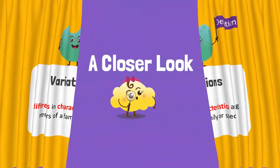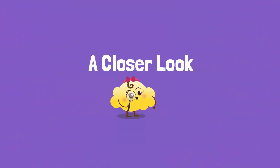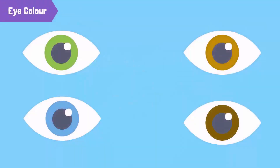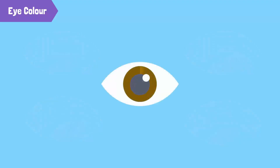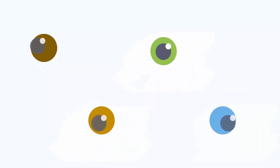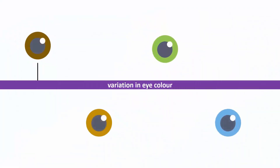Let's take a closer look at variations with some examples. Eye color is a genetic trait that varies in humans. Our genes determine the amount of eye pigment in our iris. This concentration of eye pigment in the iris affects eye color. The eye color can range from the most common color brown to the least common blue.